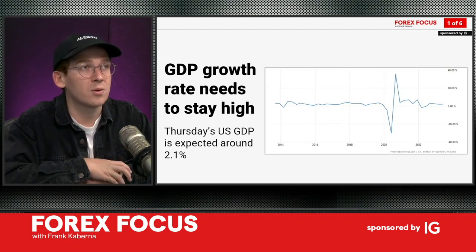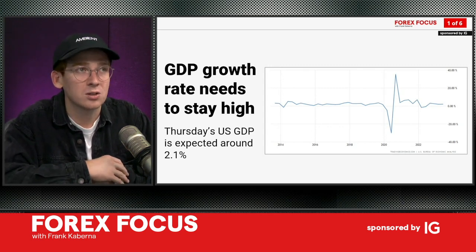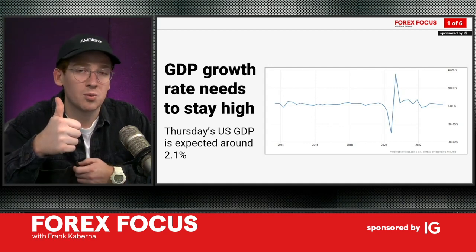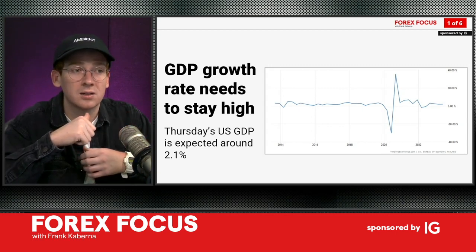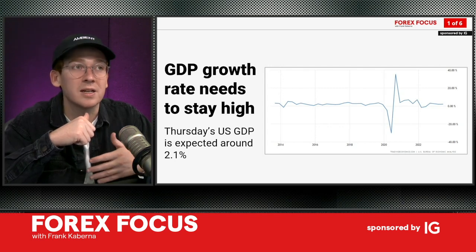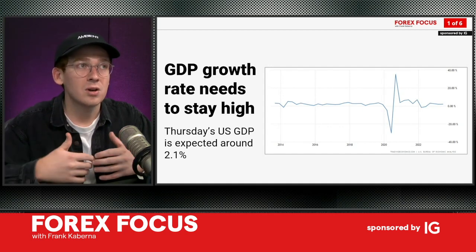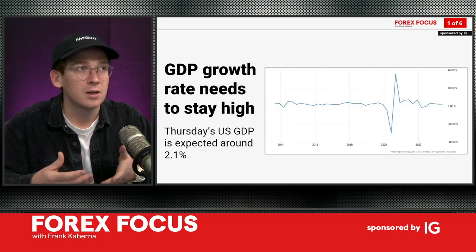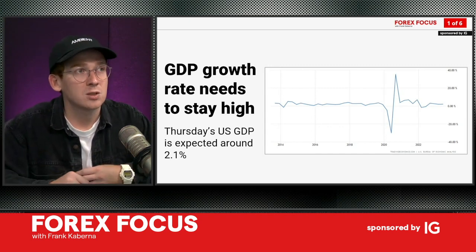We have a reading coming up on Thursday, and you see here a bit of a wacky chart. This is US GDP over the course of the last handful of years. GDP is reported on a quarterly basis, but there are also forecasts given on a monthly basis leading up to that quarterly reading. You'll notice that it's in percentage terms, letting you know on an annual basis what the expected GDP growth is relative to the last period.